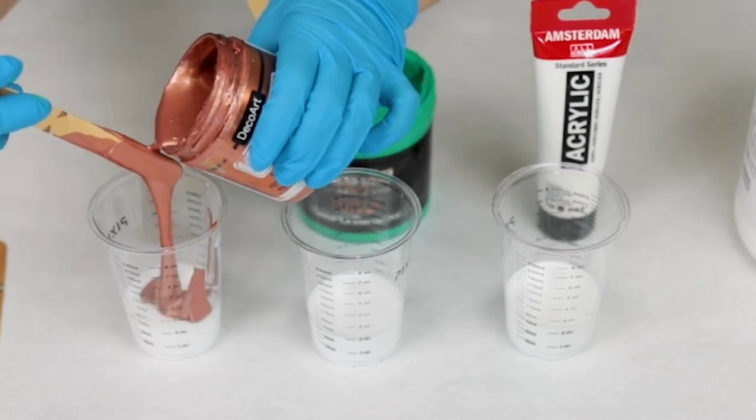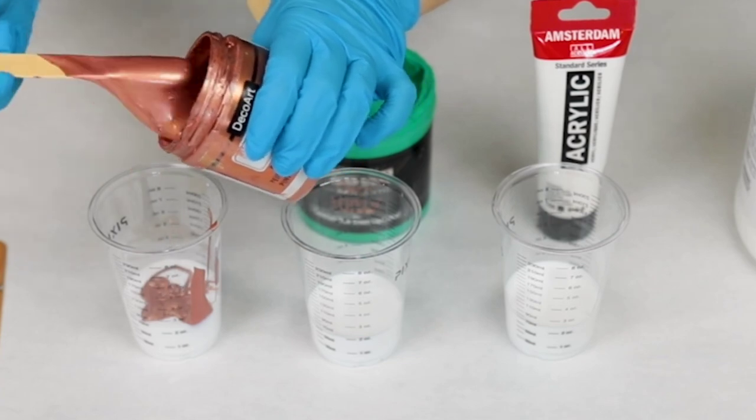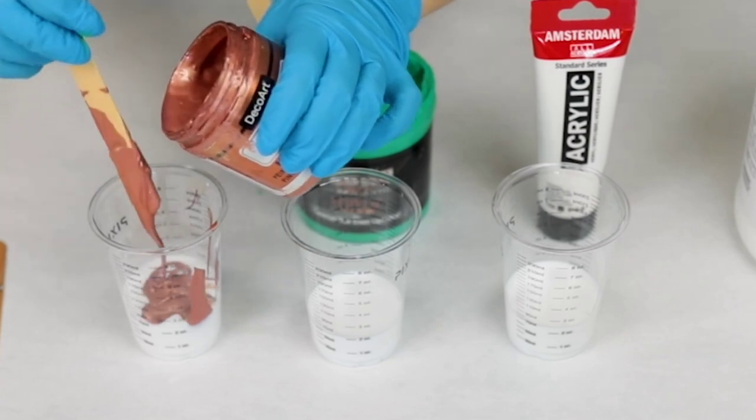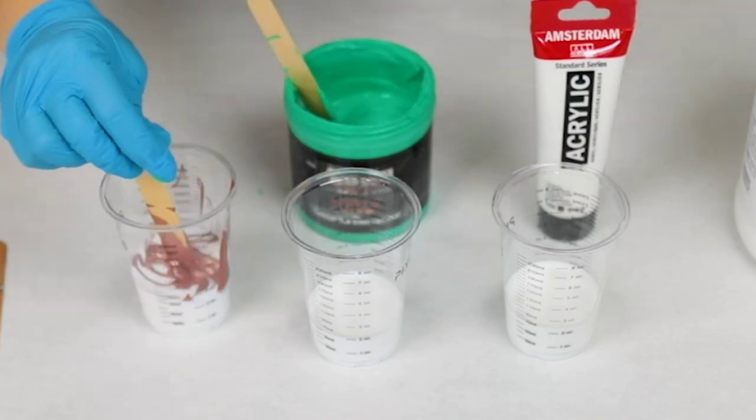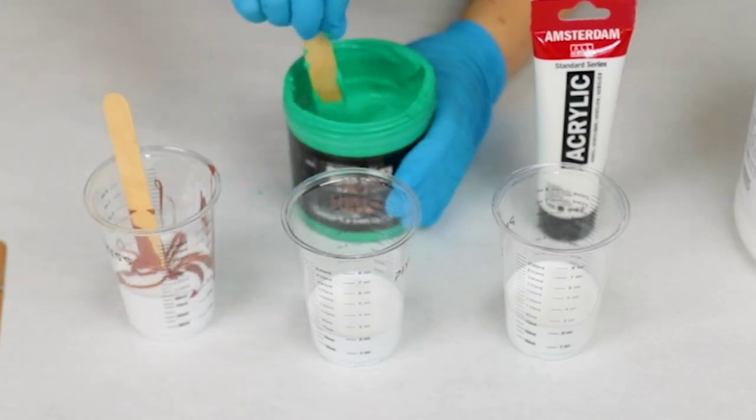I'm using three different brands of paint here to show you the slight differences between how you mix different paints. The first one is DecoArt Americana Decor Metallics Rose Gold.